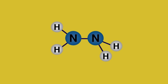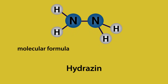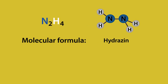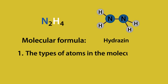Consider the compound hydrazine. Its molecular formula is N2H4, but its empirical formula is NH2. The molecular formula of a compound tells us two things: one, the types of atom in the molecule — in this case nitrogen and hydrogen.